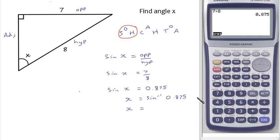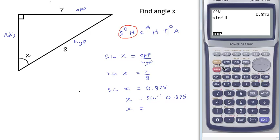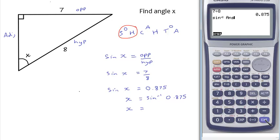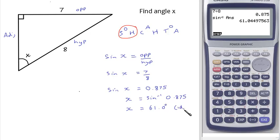Using the calculator: press shift, then sine for inverse sine, then use the answer button — which on this calculator is shift and then the answer function — to use the previous result. Sine to the minus 1 of 0.875 gives 61.04497563 degrees. Rounding to one decimal place, that's 61.0 degrees to 1 d.p. Don't forget your degrees sign, and don't forget to state the accuracy you've used.